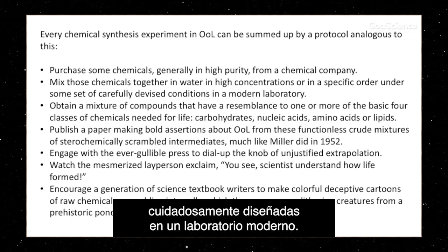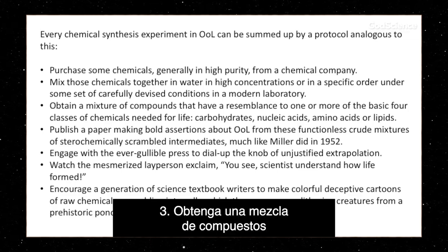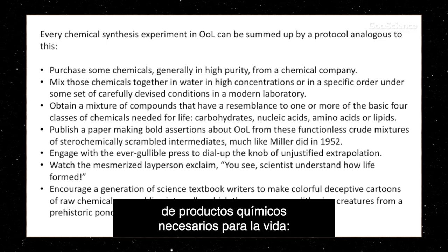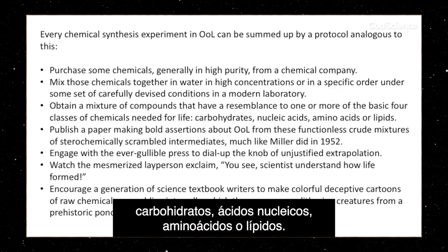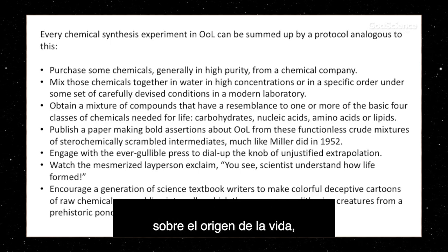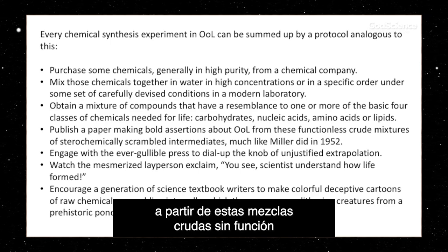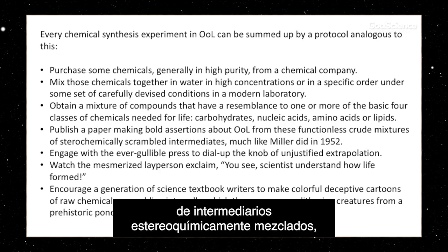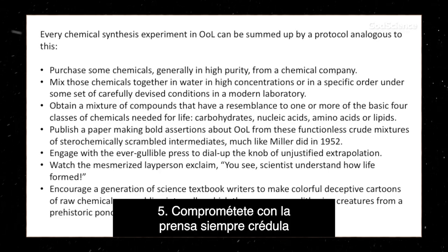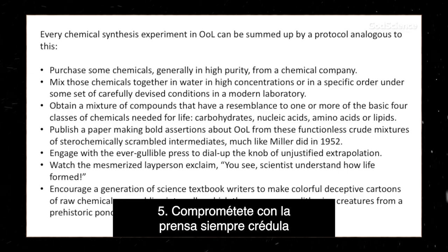Every chemical synthesis experiment in origin of life research can be summed up by a protocol analogous to this: you purchase some chemicals in high purity from a chemical company; you mix those chemicals together in water in high concentrations in a specific order under carefully devised conditions in a modern laboratory; you obtain a mixture of compounds that resemble one or more of the basic four classes of chemicals needed for life; then you publish a paper making bold assertions about origin of life from those functionless crude mixtures of stereo-scrambled intermediates, much like Miller did in 1952.